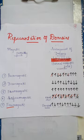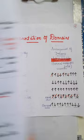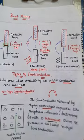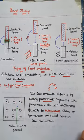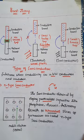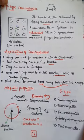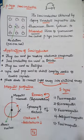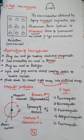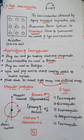Today we studied three important concepts: band theory, types of semiconductors (n-type and p-type) with their applications, and magnetic properties in case of solids. One more question may come from magnetic properties. We'll stop here — this completes your chapter and we'll continue in the next class.